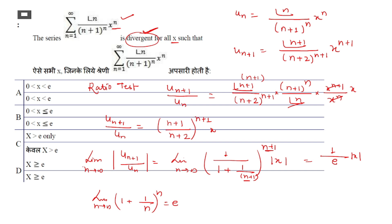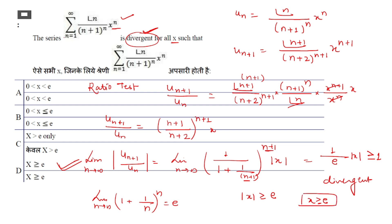By the ratio test, if this ratio is greater than or equal to 1, then the series is divergent. So we need |x|/e ≥ 1, which means |x| ≥ e. Since the options don't include negative values for x, we take x ≥ e. For this range, the series is divergent.